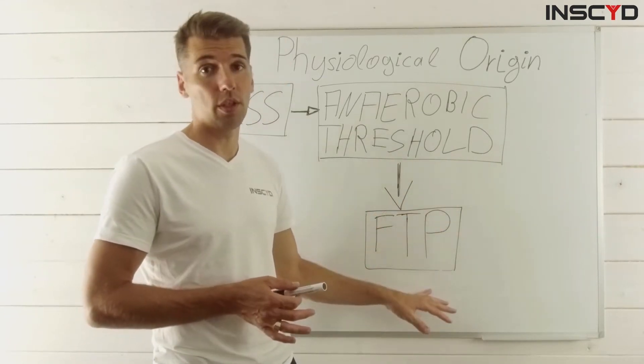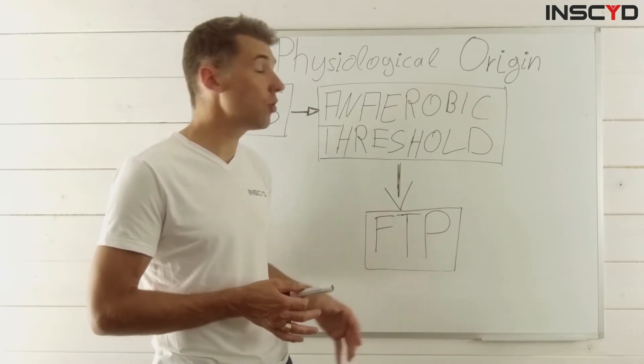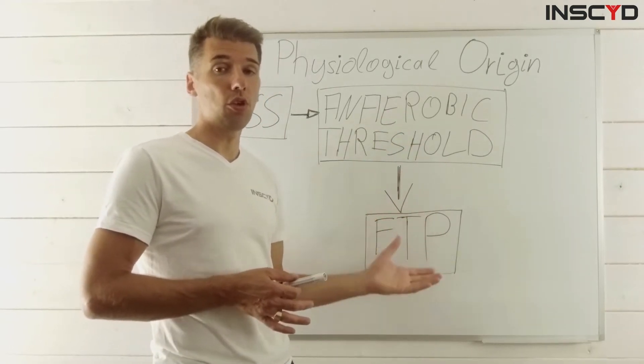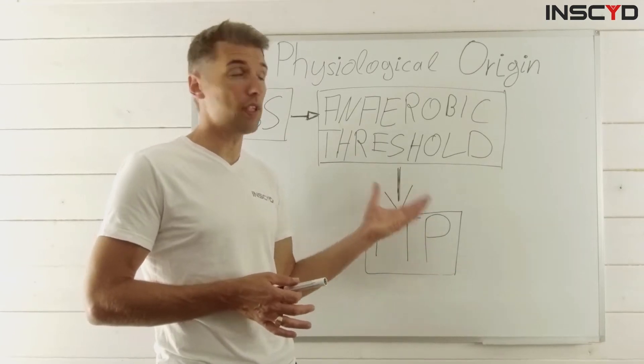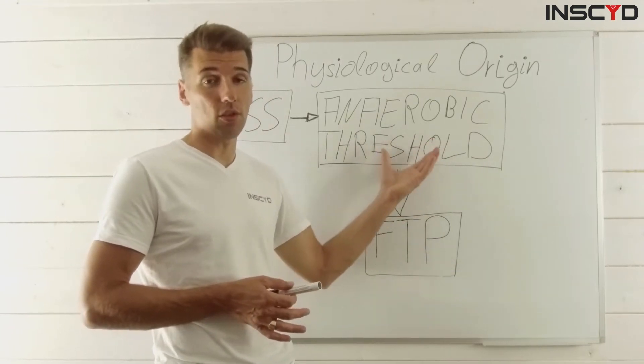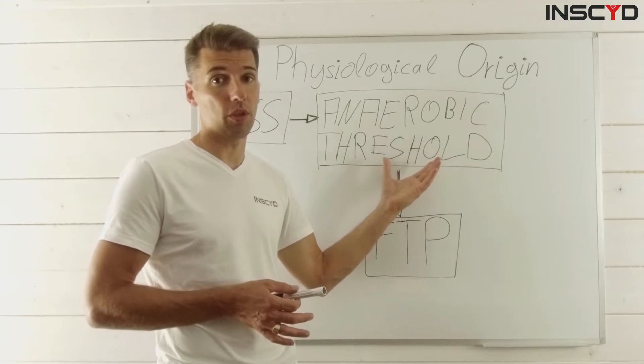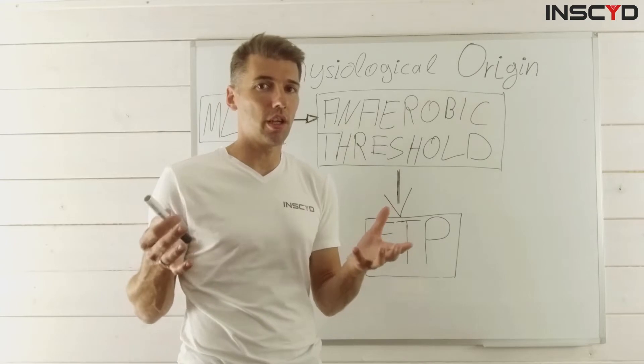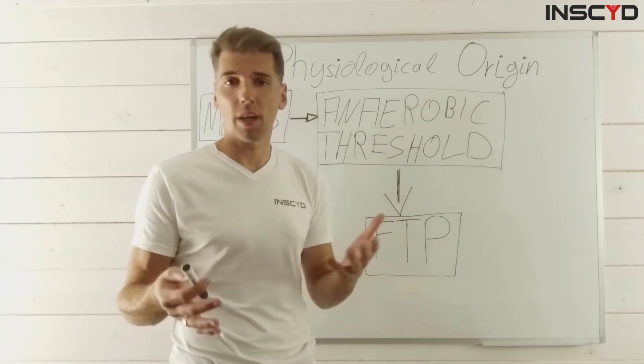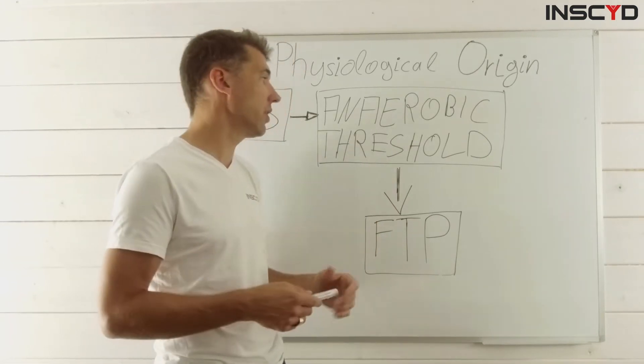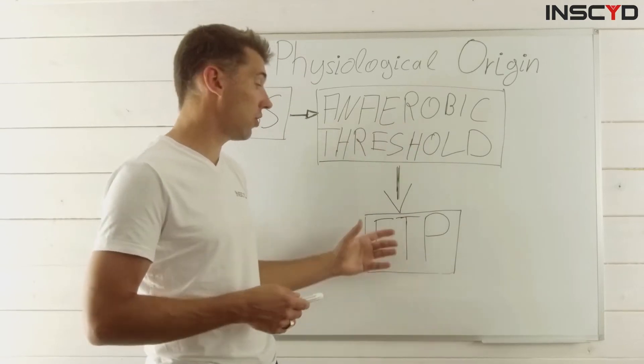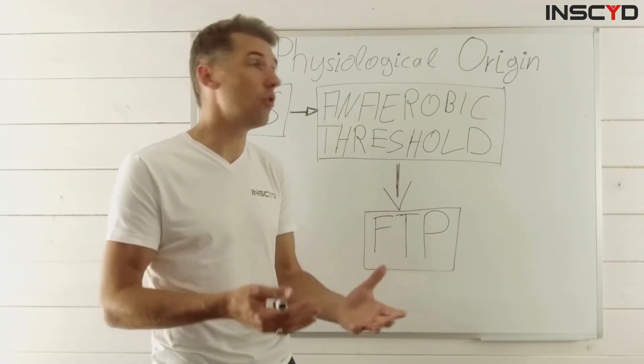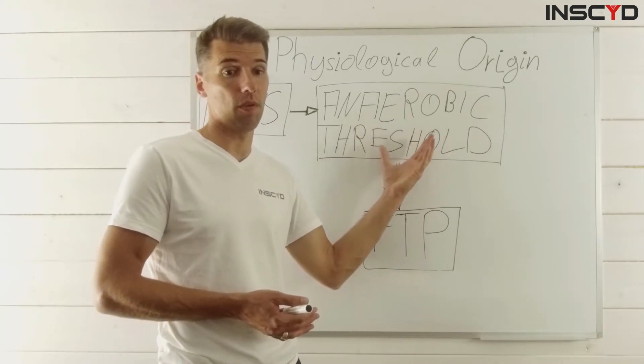So what FTP actually is, or is trying to do, is without the need to go to a lab, try to determine this domain of intensity which relates or correlates to your anaerobic threshold power. And because it is not the real physiologically correct scientific way to determine an anaerobic threshold, it is called functional threshold power, because it is a functional value of this threshold you're looking for.